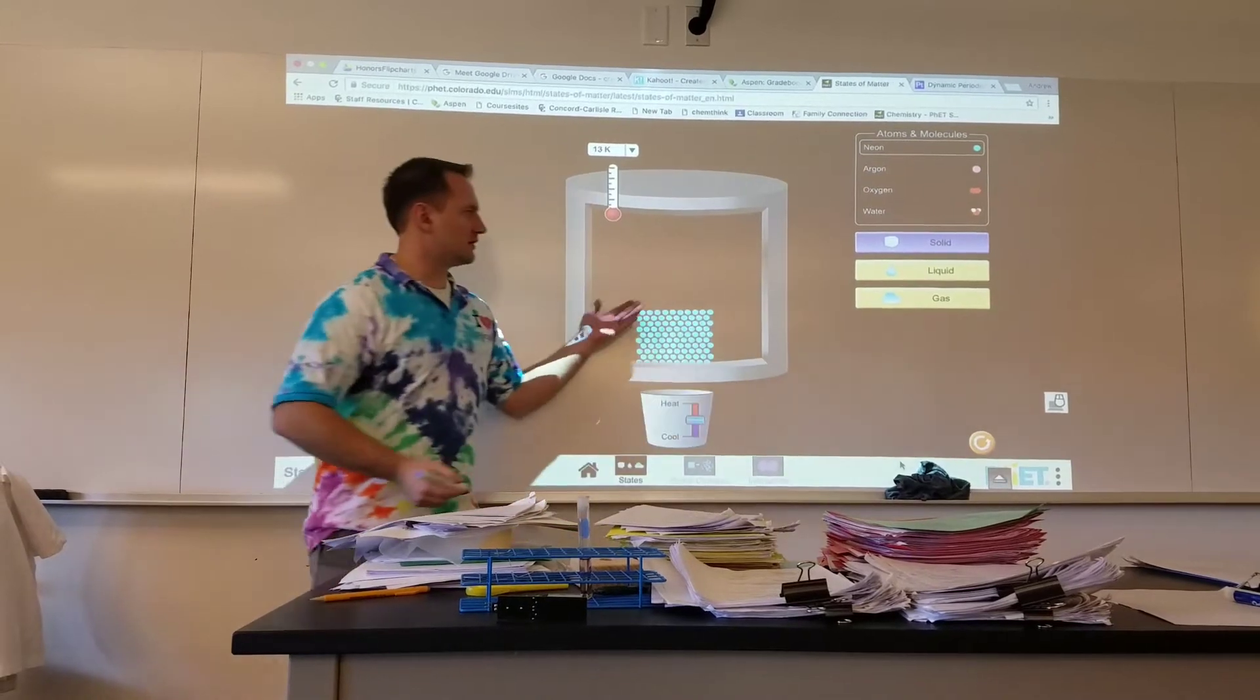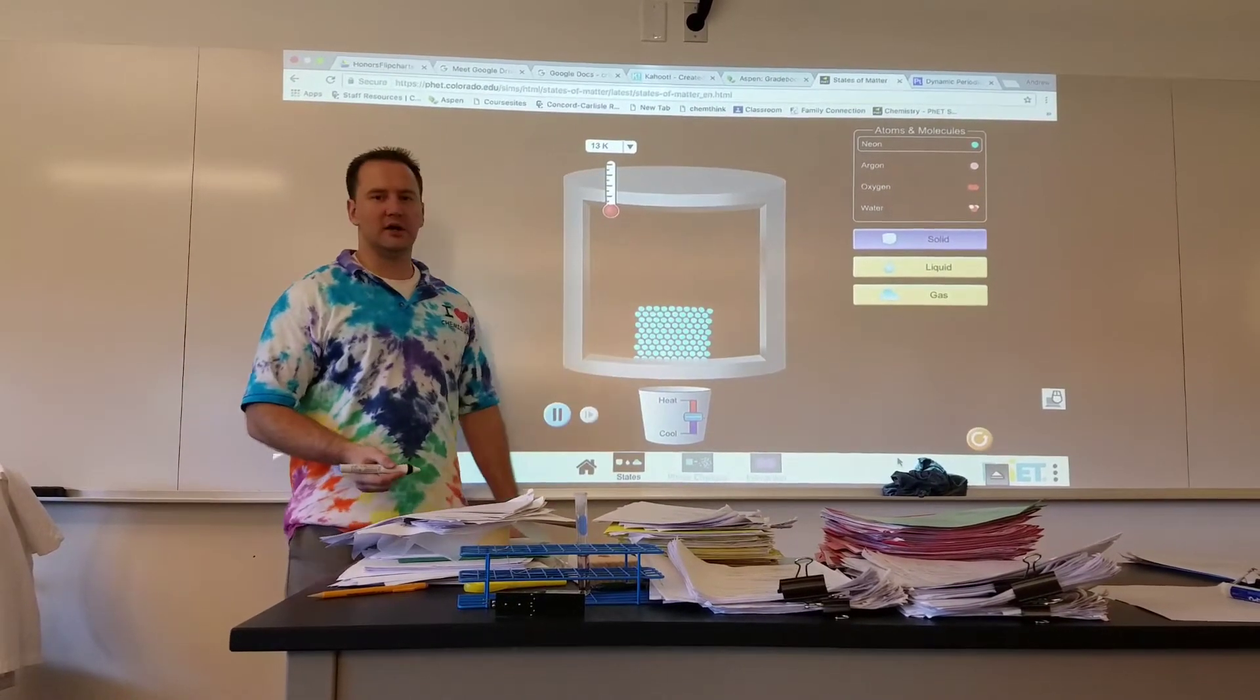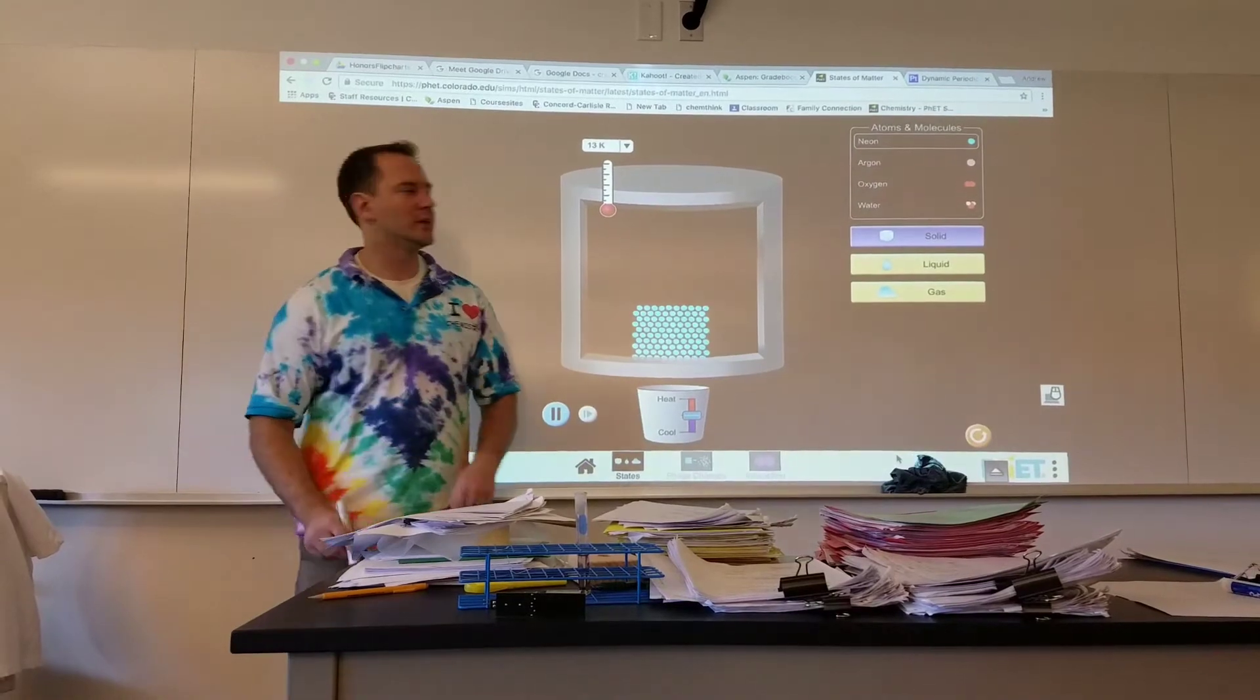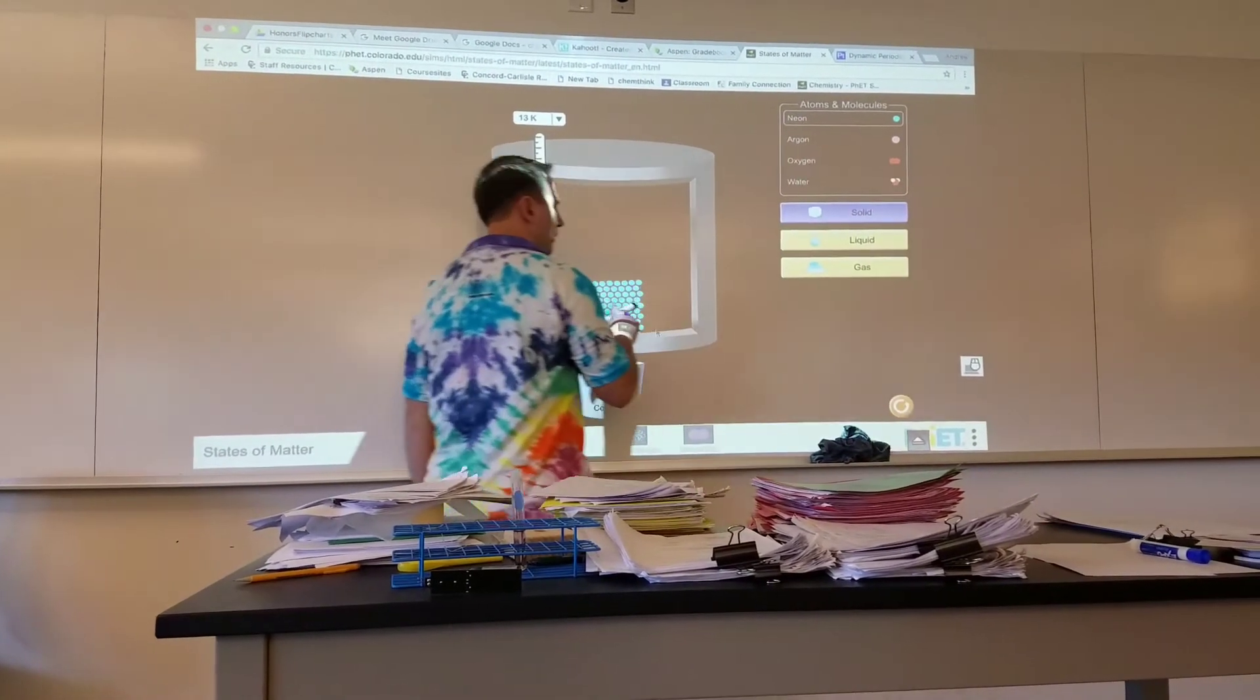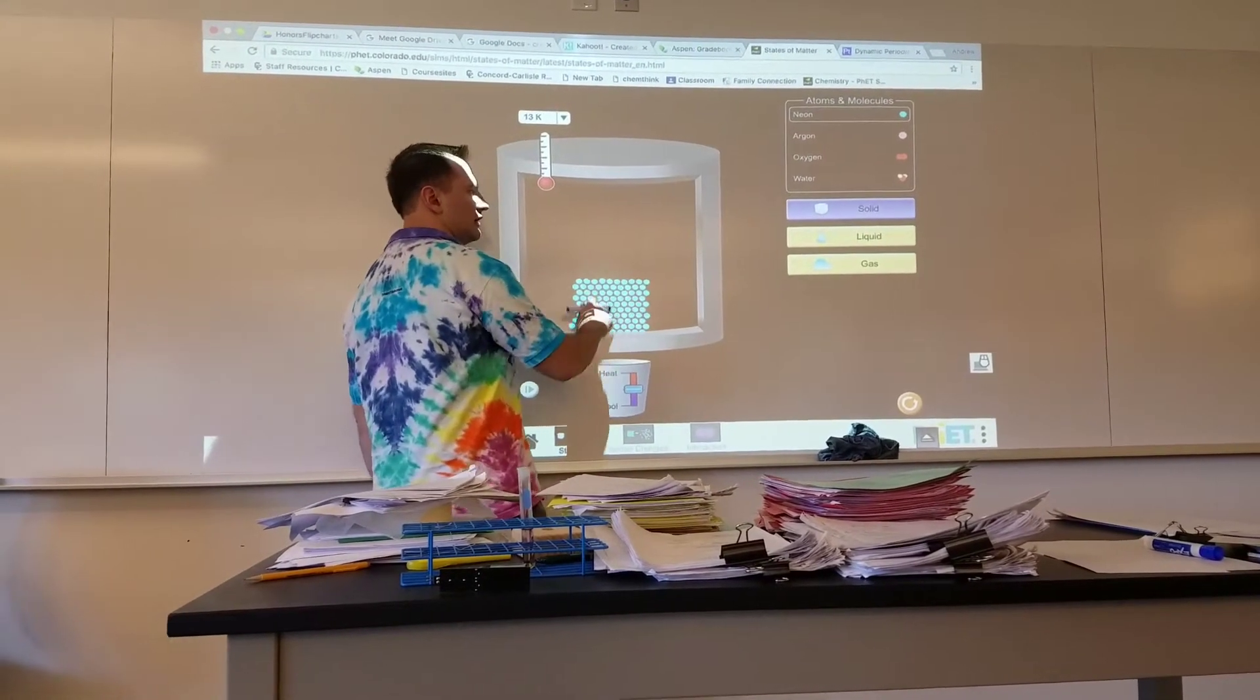This here would be an example of neon, solid neon, only one type of atom, you would call that an element. Now, this is a monatomic element. As you can see, there are individual atoms.